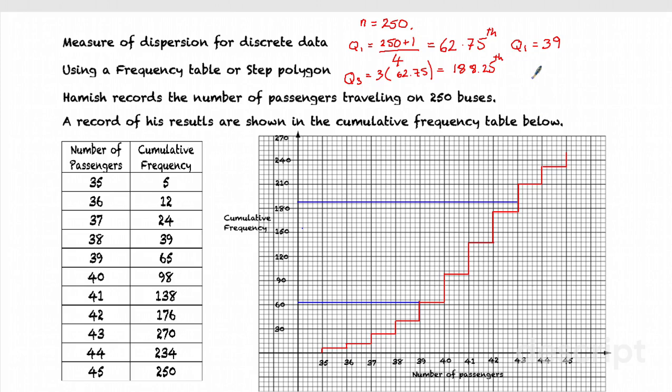From that, I can see that Q3 is 43. So my interquartile range will be 43 minus 39. And that value is 4. So that's reading from the step polygon.